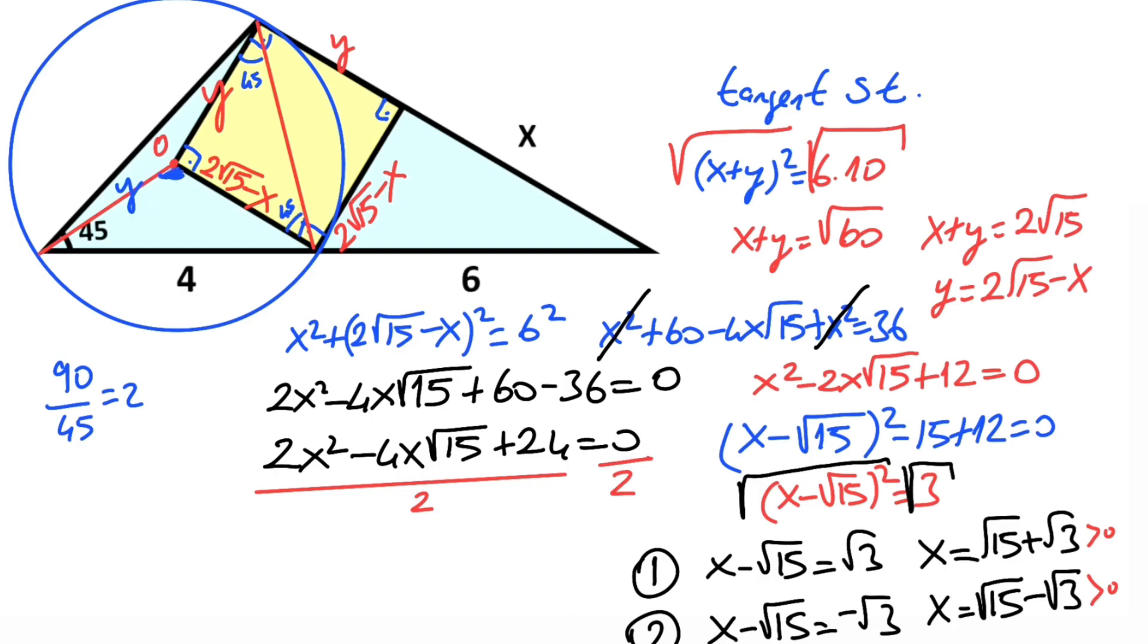And notice that this angle is an obtuse angle. Why? Because this central angle is equal to the sum of these angles. So alpha is greater than 90 degrees. That means if there's 4 units opposite alpha, the opposite of this acute angle must be less than 4 units. So 2 root 15 minus x must be less than 4 units.